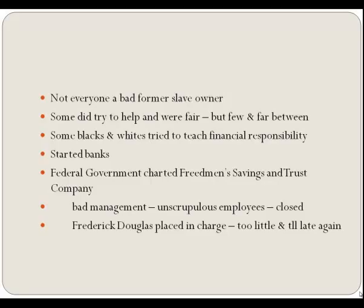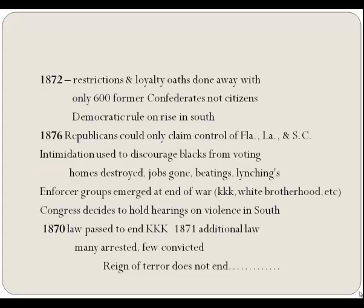Not everyone was out to re-enslave the Blacks. There were some very responsible people, both Black and white, who tried to teach the Black man how to become a better citizen, work, and even save money. There were even banks started by Black men to help. But banks at that time only operated on the money they had on deposit, and Black depositors didn't have much to put in. The federal government chartered the Freedmen Savings and Trust Company, which opened branches all over the South. But inaccurate bookkeeping and employees who helped themselves caused the bank to fail. Frederick Douglass was made president of the bank to try to regain stable footing, but it was too little too late—the bank failed and closed after a short eight-year run.